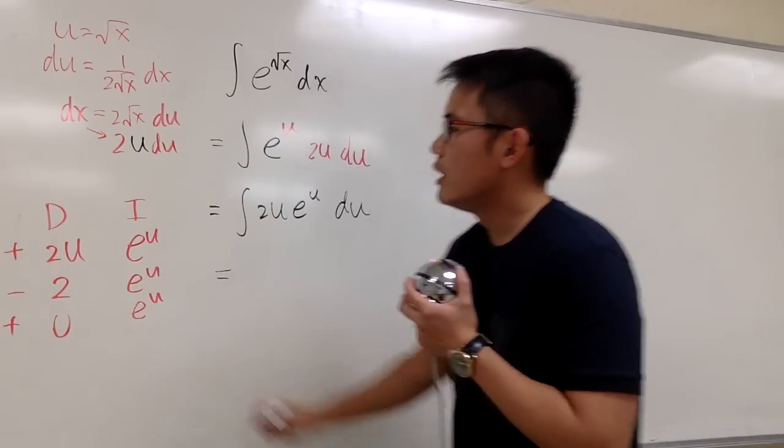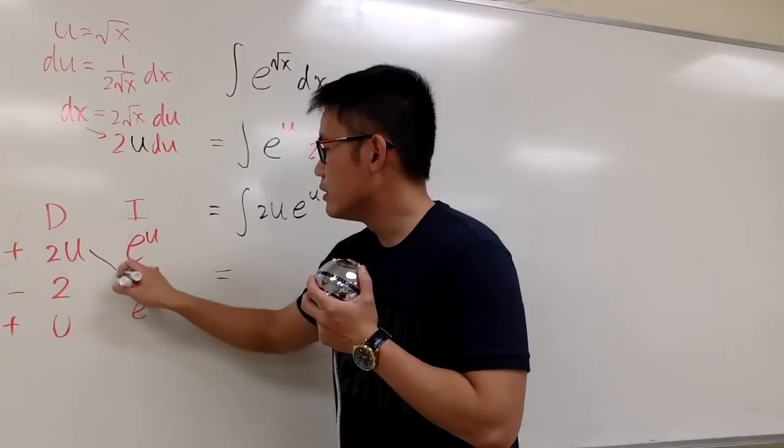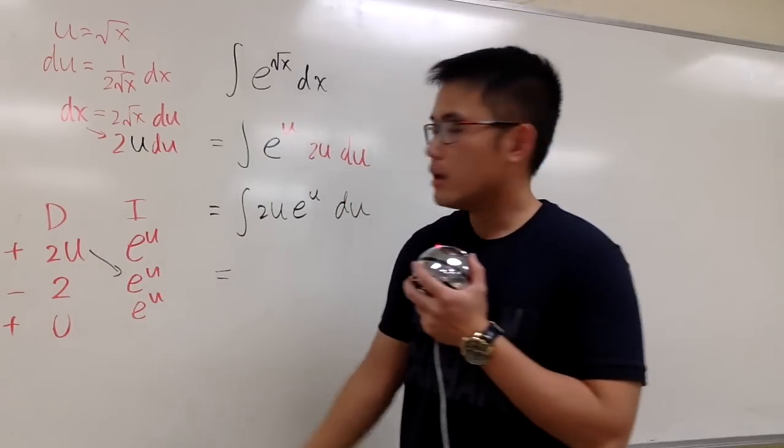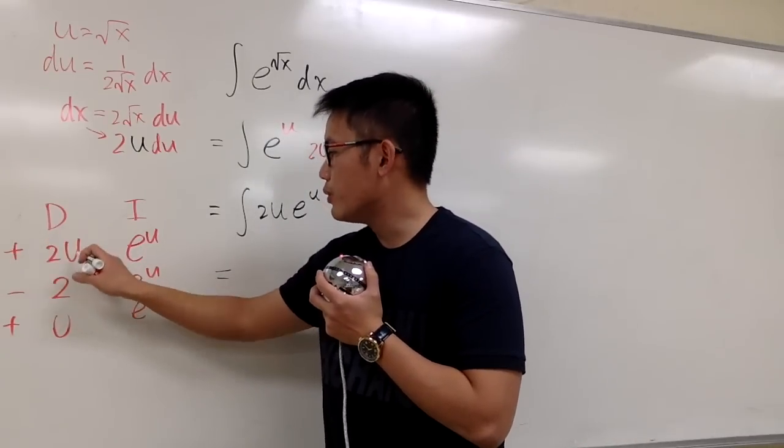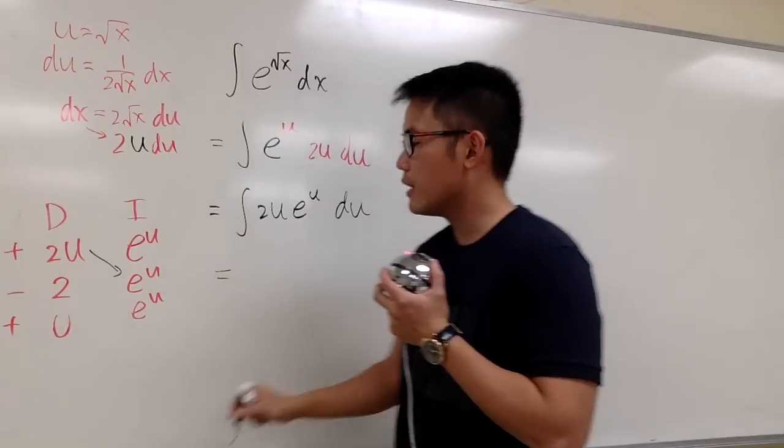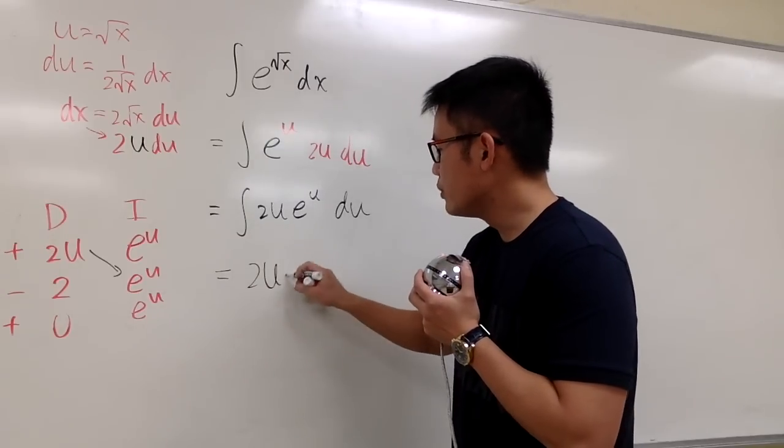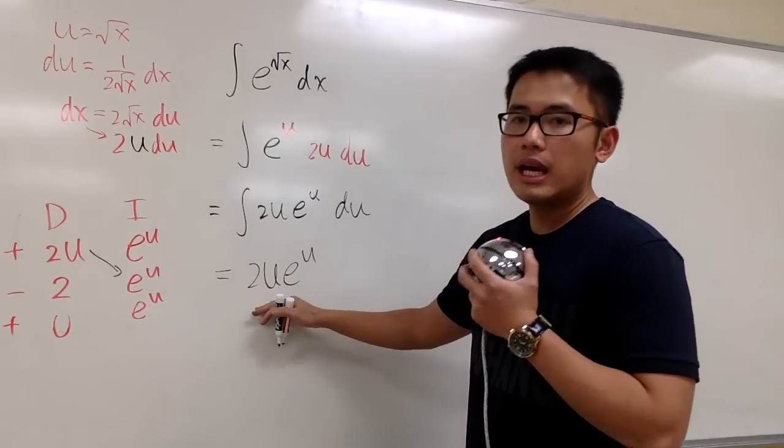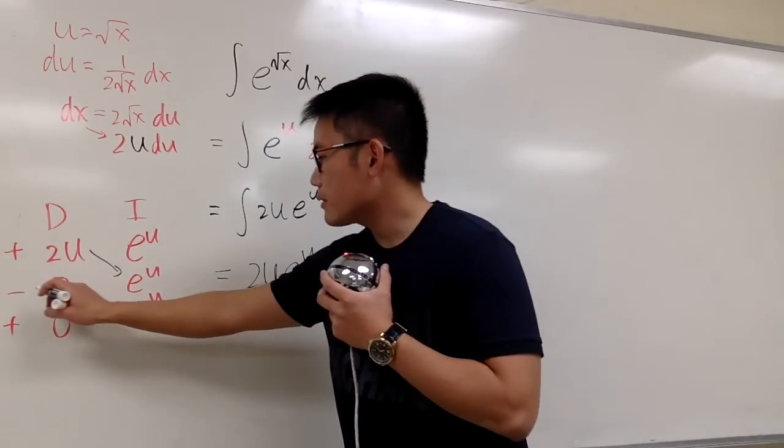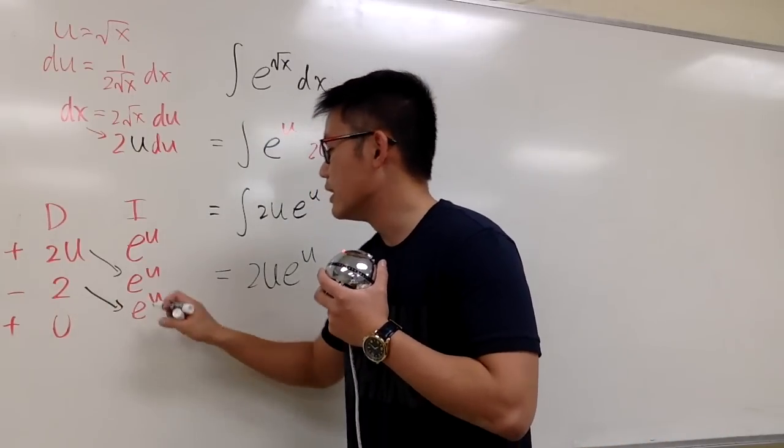This is going to be, the product of the diagonals is the part of the answer already. The first part is going to be 2u times e to the u, and both of them are positive. So, positive 2u e to the u. And then the second part is going to be negative 2 times e to the u.